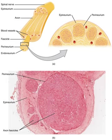Nerves that exit from the cranium are called cranial nerves, while those exiting from the spinal cord are called spinal nerves.